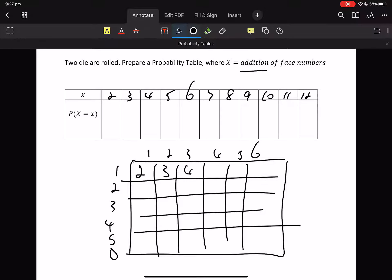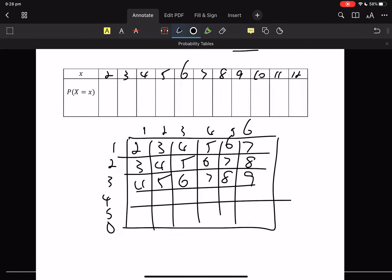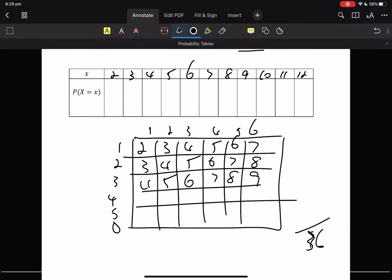1 and 1 is 2. 1 and 2 is 3. 4, 5, 6, 7. 2 and 1 is 3. 3 and 1 is 4. We've done this before, haven't we, in previous grades. What's our po? We've got 30, 36.